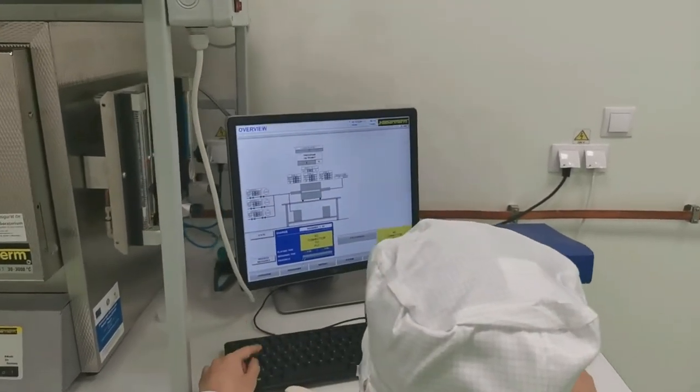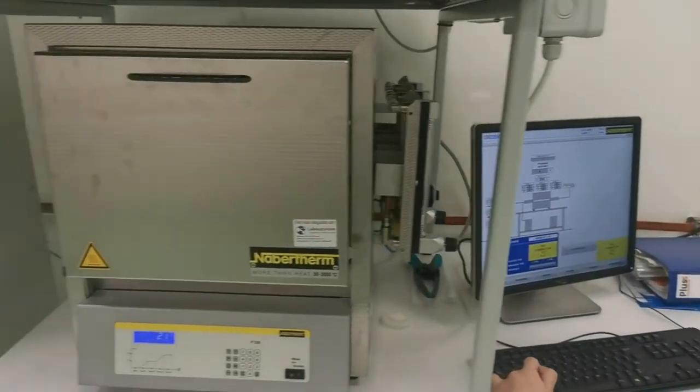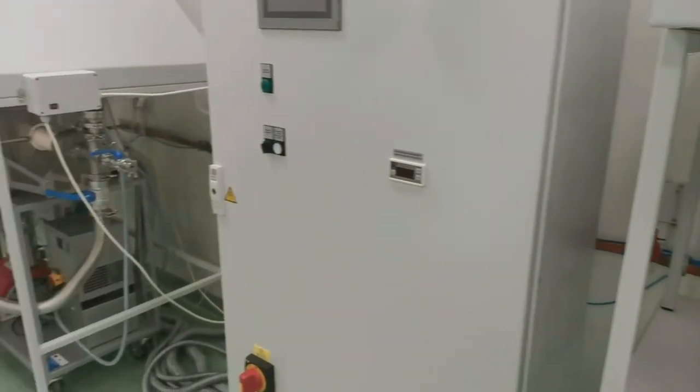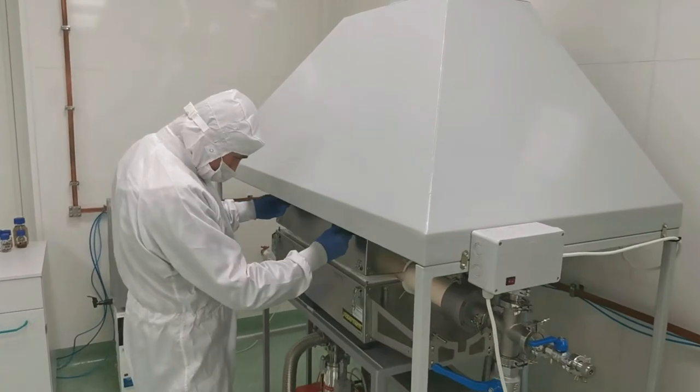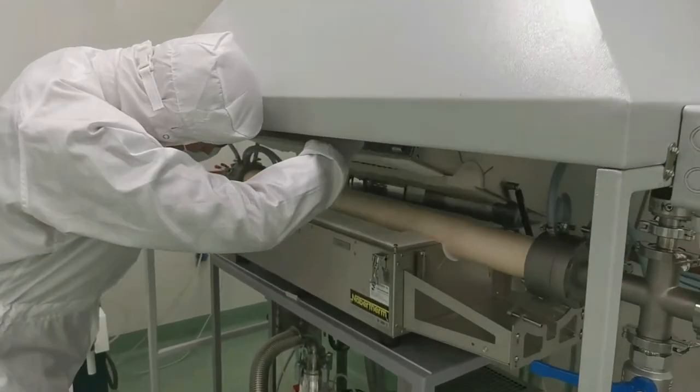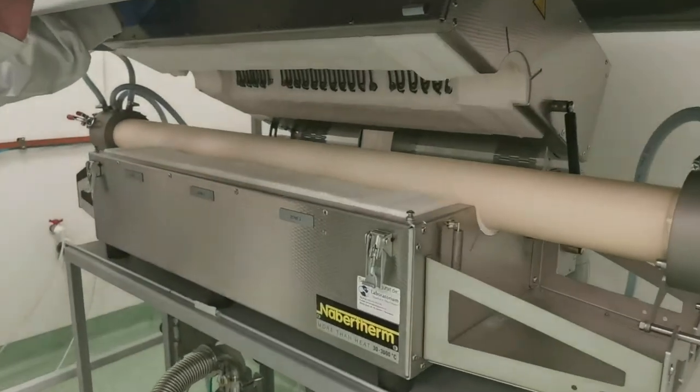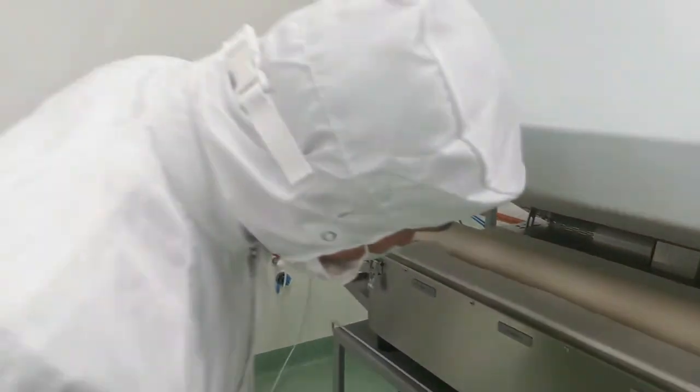The second available oven is a tubular furnace which, similar to the calcination oven, can be used to perform thermal treatments up to 1300 degrees under air or controlled atmosphere but also under vacuum, down to 10 to the minus 5 millibar.